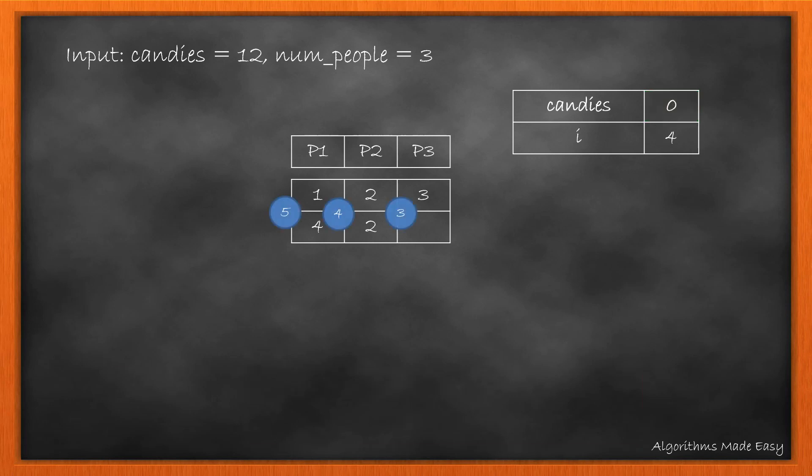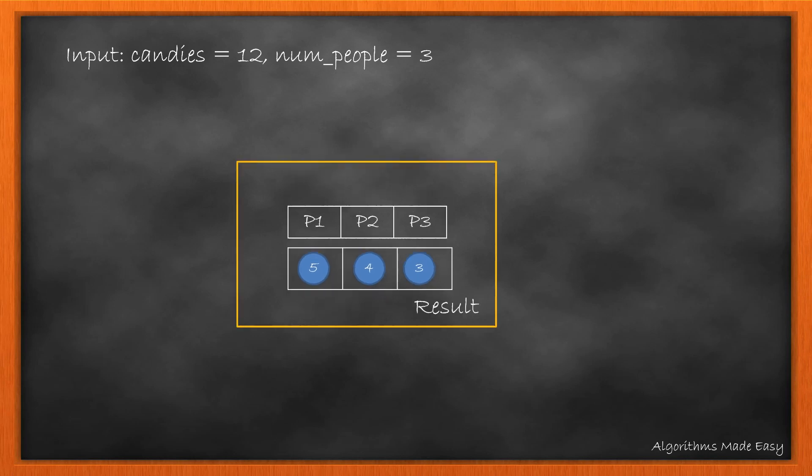The number of candies each person has is the sum of their column. So person 1 has 5 candies, person 2 has 4, and person 3 has 3. This is the final result we return.